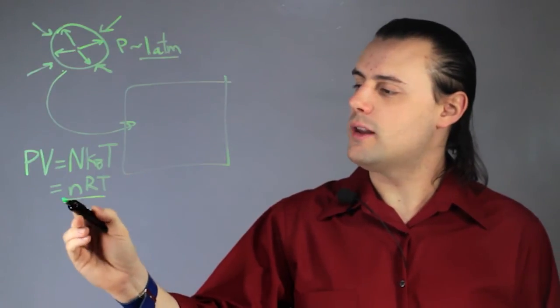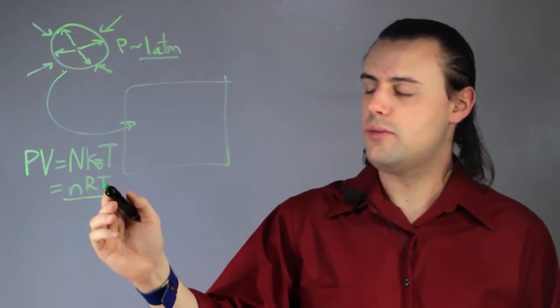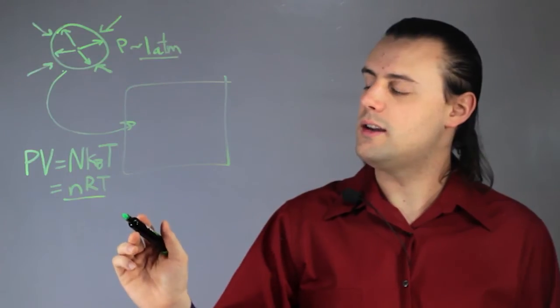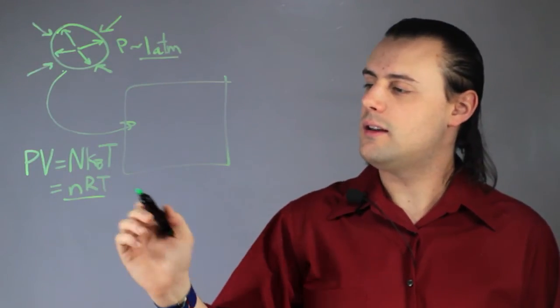And in this formulation, little n is the number of moles, capital R is the ideal gas constant, and T is temperature again.